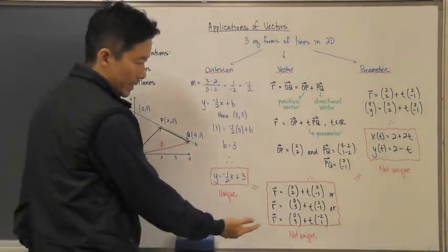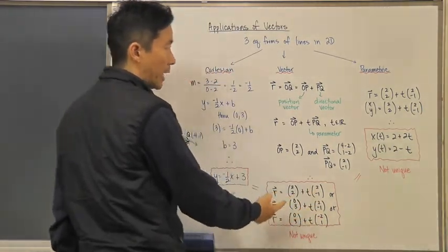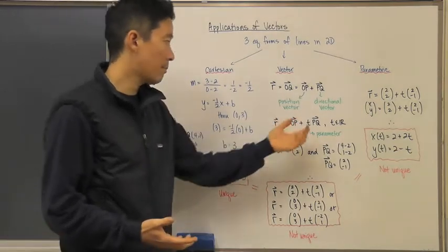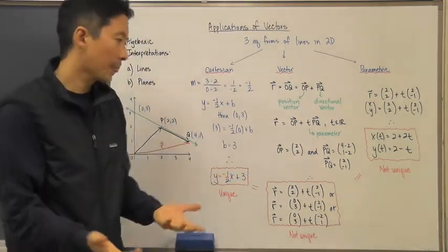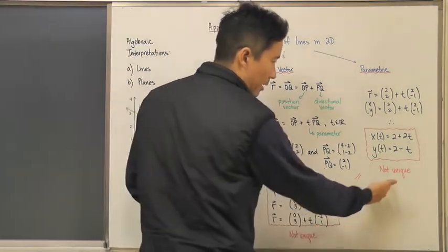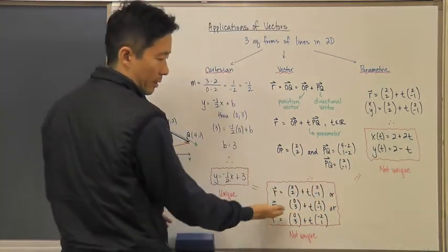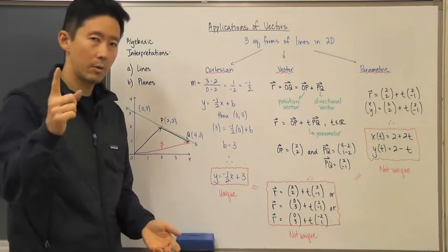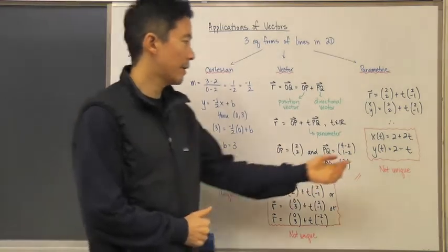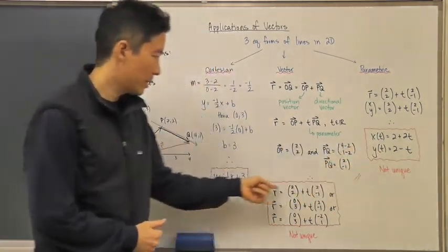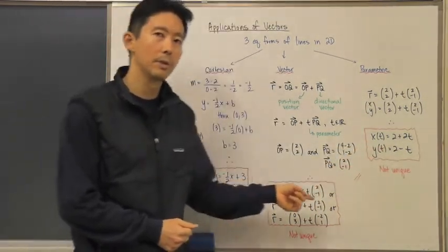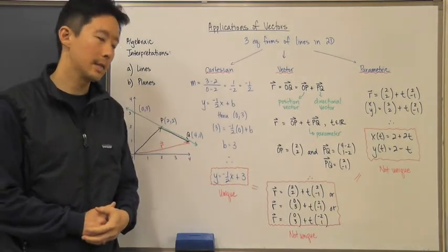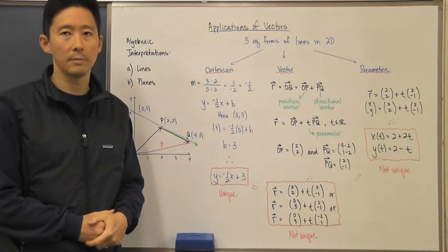One important note: the vector form of a line is not unique. You can find many different representations because the position vector OP and directional vector PQ can vary. The parametric form, however, is unique once simplified. I'd like to challenge you to figure out how to convert between each of these forms — Cartesian, vector, and parametric — as that will be absolutely essential. We'll take questions in class. See you later!